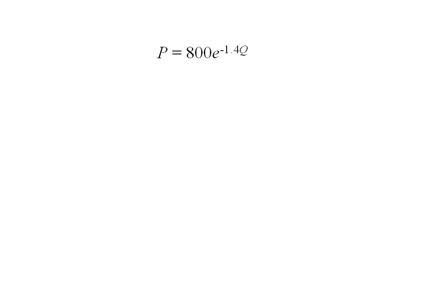Here's another expression: P = 800e^(-1.4Q). Taking its derivative, I recopy it in its entirety: 800e^(-1.4Q).